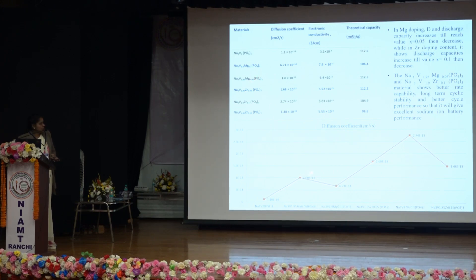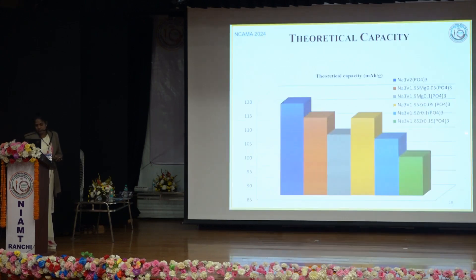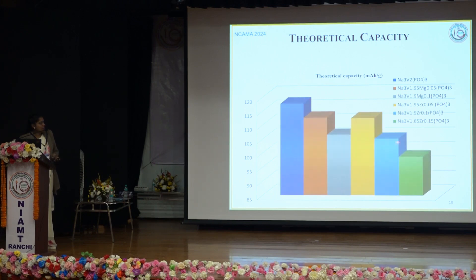This is the diffusion coefficient profile. If magnesium doping is done, a magnesium ratio of 0.05 gives better results than conventional NVP — that is, sodium vanadium phosphate. If zirconium is used, the result is far better than magnesium, and the optimal composition is zirconium at 0.1. With respect to theoretical capacity, the conventional sodium vanadium phosphate has much higher theoretical capacity than the rest of the doped cathode materials.